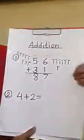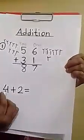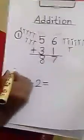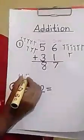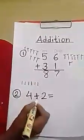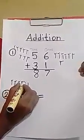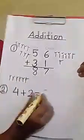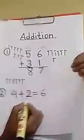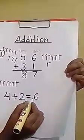Number 2. There is 4 plus 2. First, we will draw 4 sticks. 1, 2, 3, 4. And plus 2. 1, 2. We got 1, 2, 3, 4, 5, 6. 6. So, our answer is 6. 4 plus 2 equal to 6. You understood?